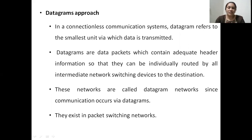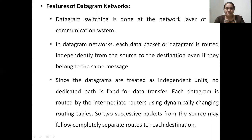Datagrams exist in packet switching networks. Now, the features of datagram networks: datagram switching happens in the network layer of the communication system. In datagram networks, each data packet is called a datagram and it can be routed independently from source to destination node, even if they belong to the same message. A single message is divided into datagrams and each datagram will be transmitted individually on different paths. Each packet of the message will follow different paths, and each datagram is treated as an independent unit on the network, as there is no fixed dedicated path for data transfer.